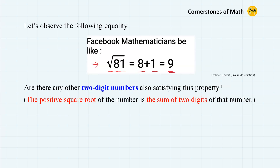Are there any other two-digit numbers also satisfying this property? That is, the positive square root of the number equals the sum of the two digits of that number. I would like to handle this problem my own way in this video.